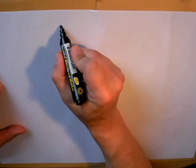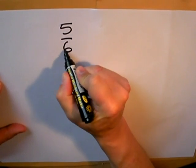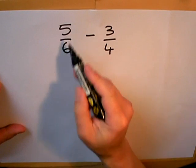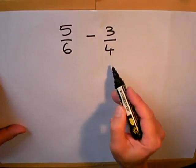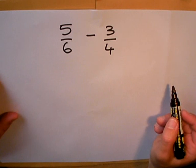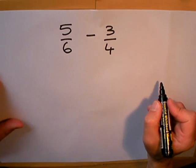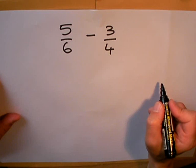This time I'm going to do an example of subtraction of fractions with two different denominators. Here I have five sixths and I'm going to subtract three quarters. I can't do this straight away because the bottom numbers are not the same. I need to turn them into a common denominator.